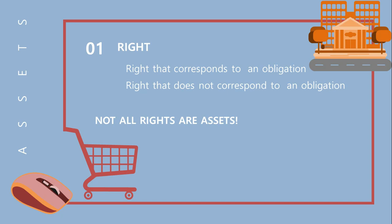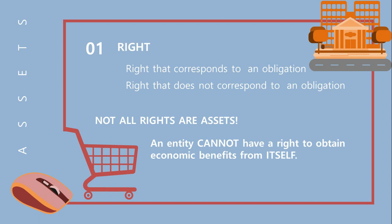An entity also cannot have a right to obtain economic benefits from itself. This is the reason why an entity's treasury shares cannot be considered an asset. Many rights are established by contracts — such as the right to collect cash from sales — or by legislation — such as the right to operate a broadcasting station granted by a franchise — and similar means.